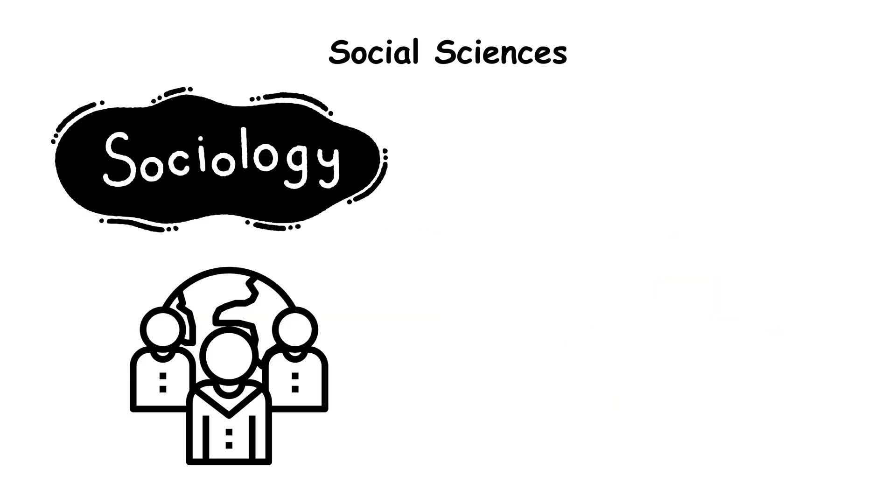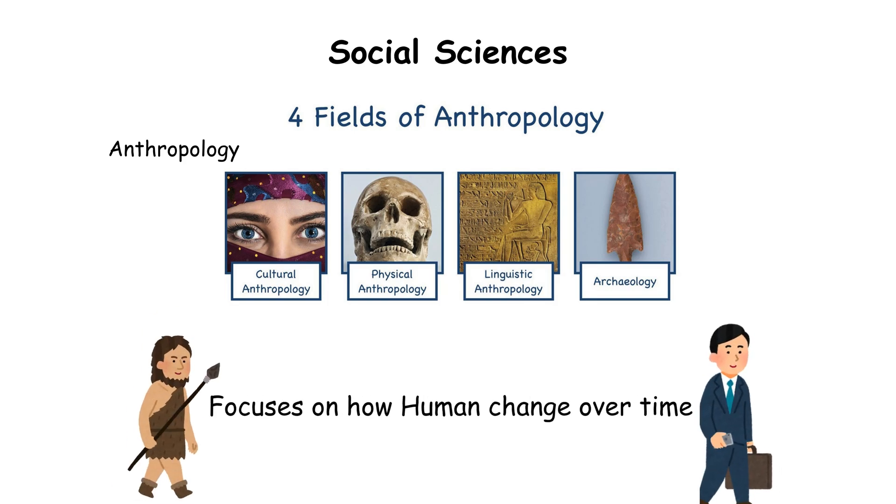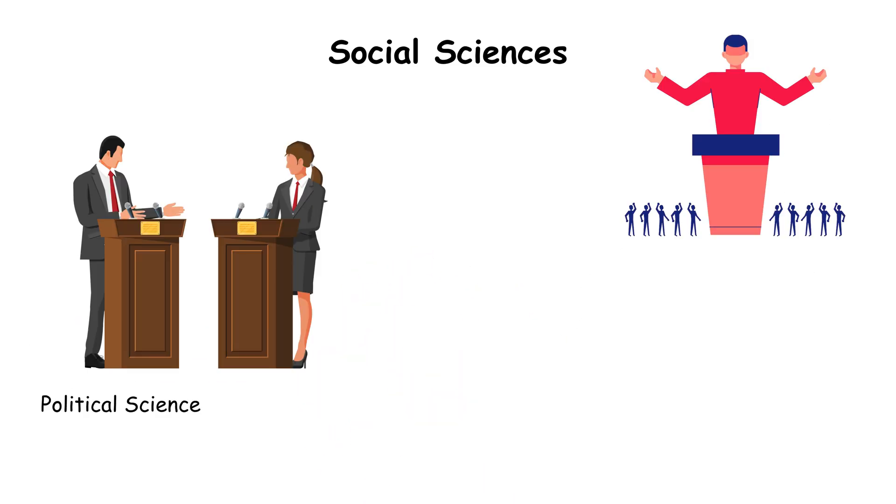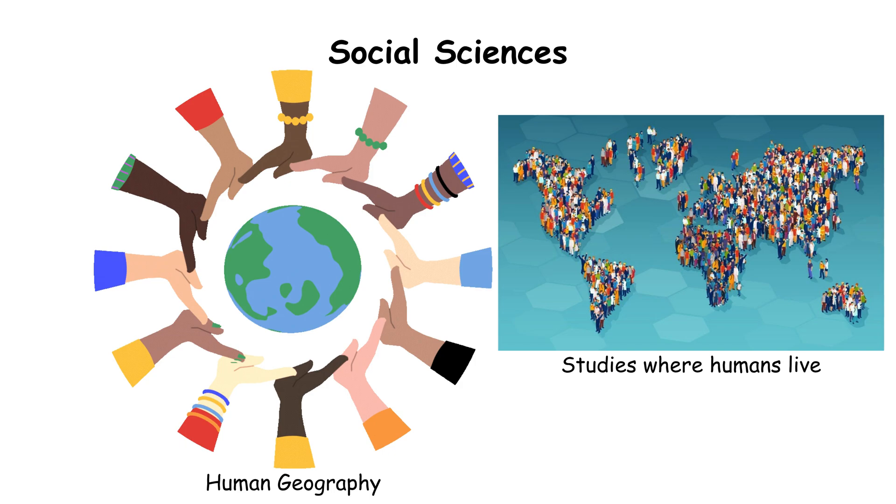Sociology zooms out to examine societies and their structures. Anthropology traces human culture through time. Economics studies choices, scarcity, and value. Political science investigates government systems. Human geography connects people to the places they live.